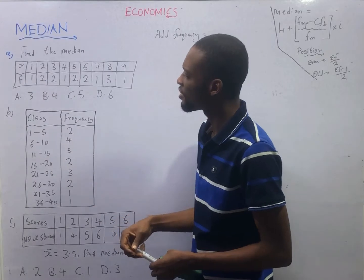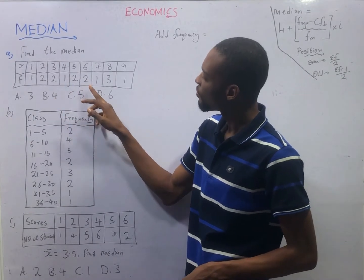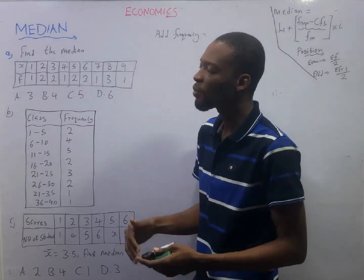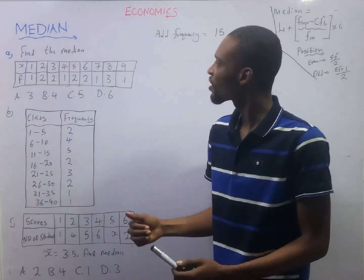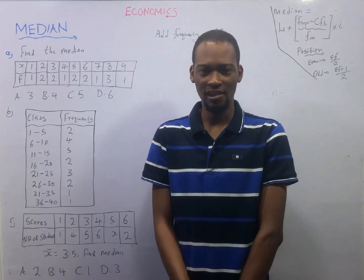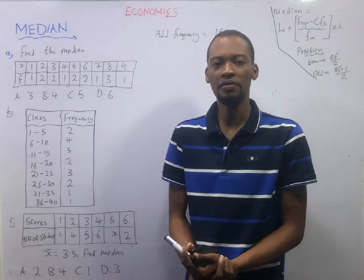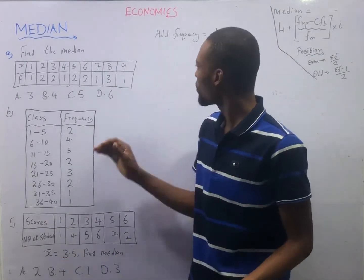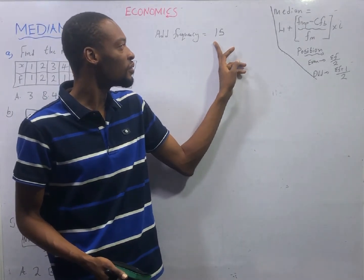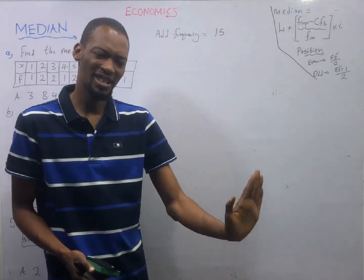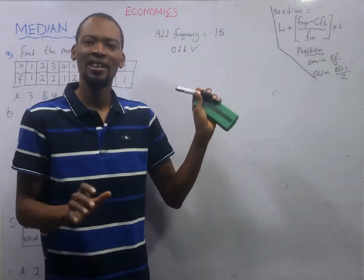Add the frequency: one plus two is three, plus two is five, plus one is six, plus two is eight, plus two is ten, plus one is eleven, plus three is fourteen, plus one is fifteen. So the summation of frequency equals 15. After adding the frequency, ask yourself: is it odd or is it even? Even numbers are numbers that can be divided by two without remainder - like 10. We got 15; fifteen divided by two gives seven point something, so since there is a decimal this is an odd number.